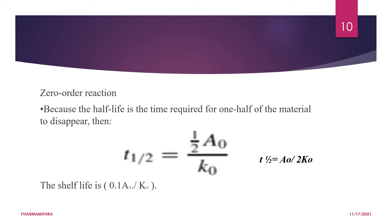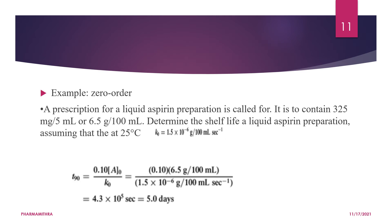For zero-order kinetics, half-life is the time required to reduce concentration to half, given by: t₁/₂ = A₀ / (2k₀). The shelf life is given by: t₉₀ = 0.1A₀ / k₀. These are the key equations for zero-order reaction.